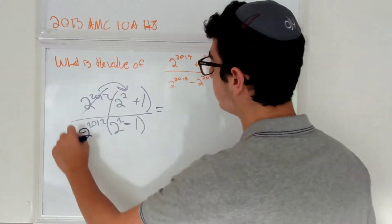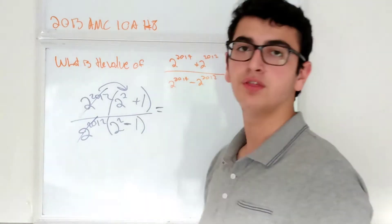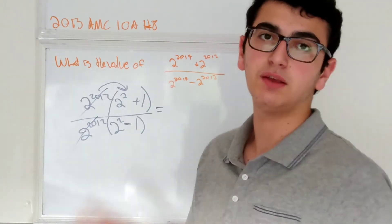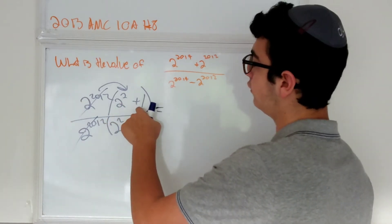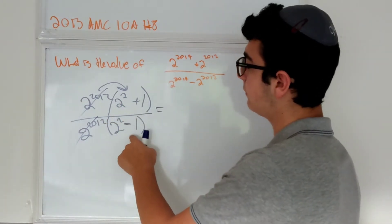What more to do? I'm just going to cross out 2 to the 2012th on the numerator and denominator because they equal 1. So now we're just left with 2 squared plus 1 over 2 squared minus 1.